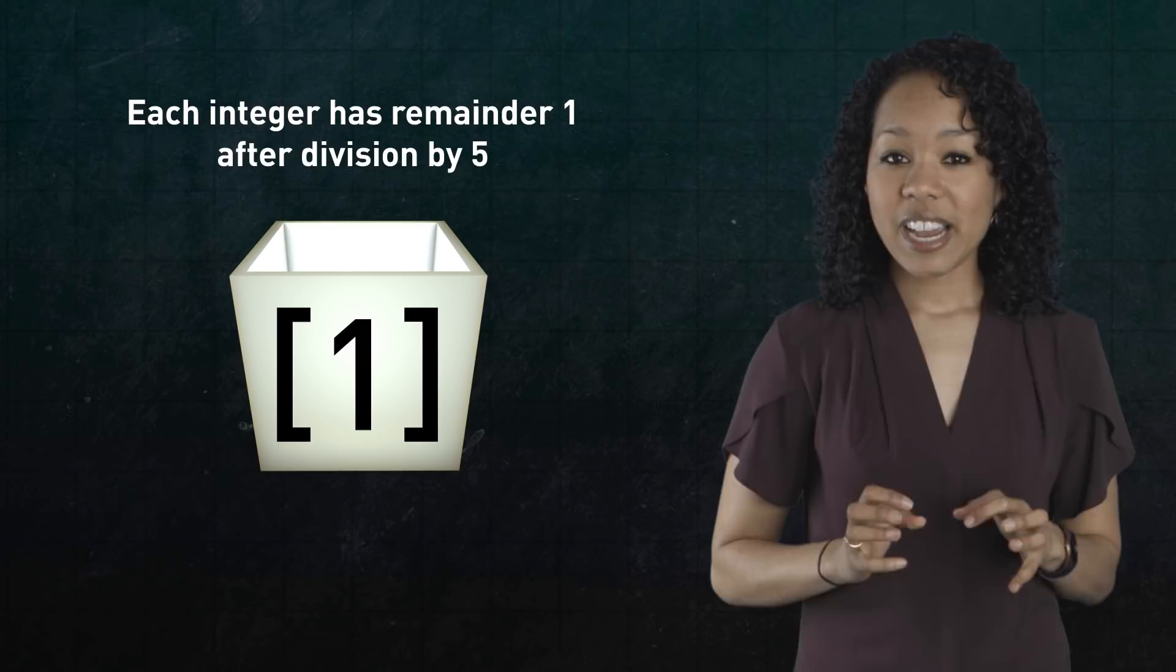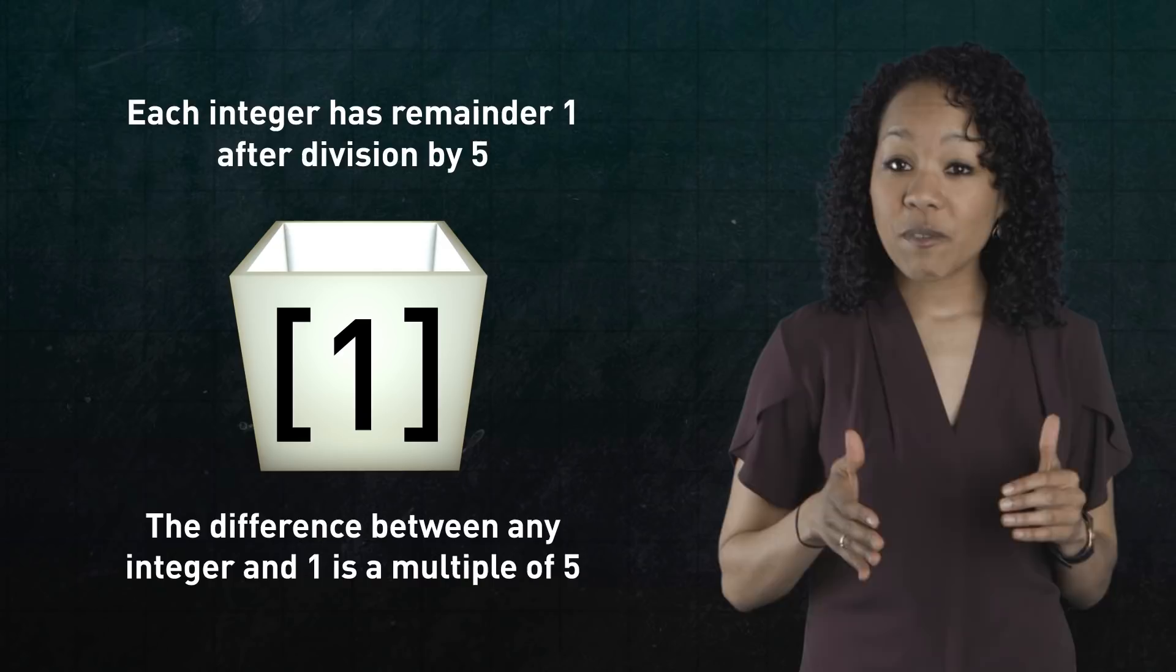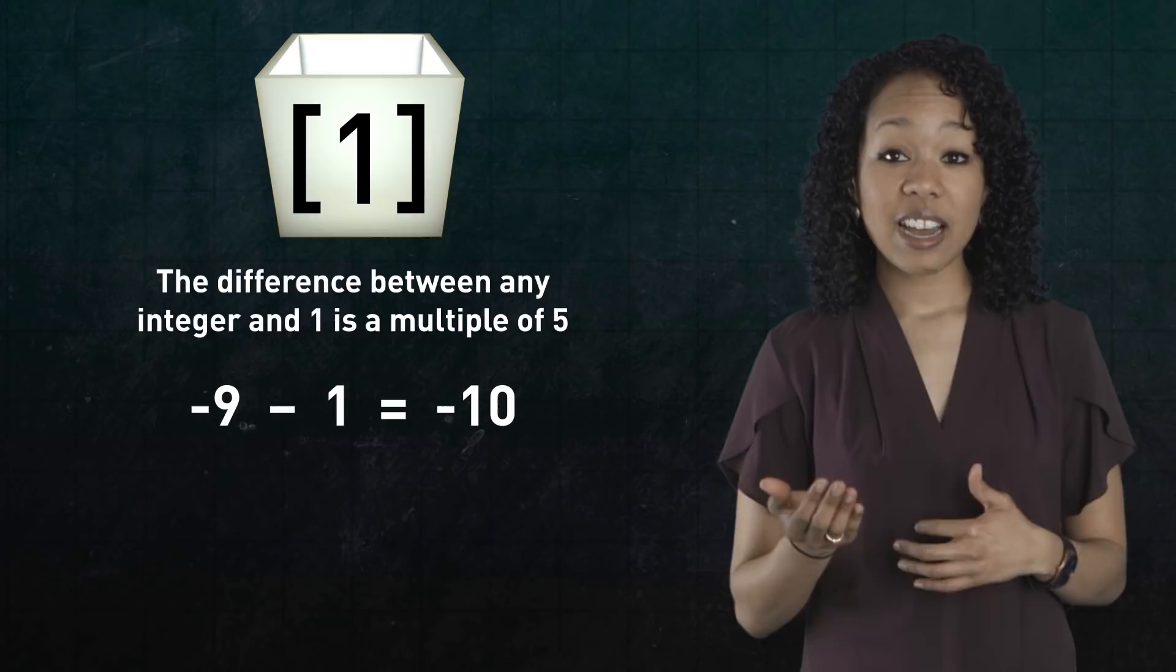Let me explain equivalents a bit more. Look in the box 1, for example, where each integer has a remainder of 1 after division by 5. This is the same as saying that the difference between any integer and 1 is a multiple of 5. For example, negative 9 minus 1 is negative 10 and 6 minus 1 is 5 and so on.